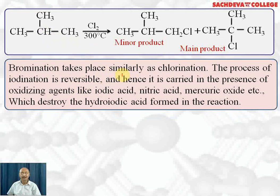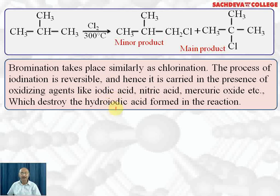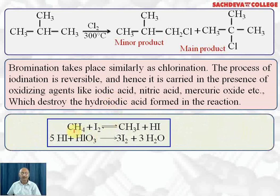Bromination takes place in the same manner. The process of iodination is reversible because HI is formed, which is a good reducing agent and is able to reduce the alkyl iodide back to the alkane and iodine. Therefore, iodination is carried out in the presence of an oxidizing agent like iodic acid, nitric acid, or mercuric oxide, which destroy or react with HI to regenerate iodine, preventing the backward reaction.